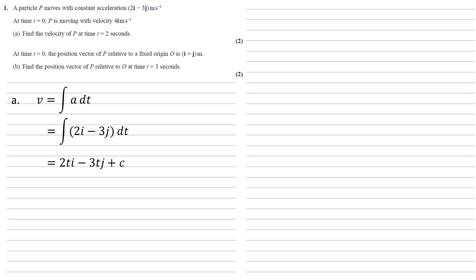Now to work out what this C is, we're going to use what we've been given, which is that at time t equals 0, V is equal to 4i. So substituting those in, we get that 4i is equal to 0i minus 0j plus C. So C must be equal to 4i, giving us V equals 2ti minus 3tj plus 4i.